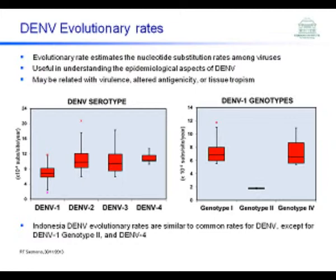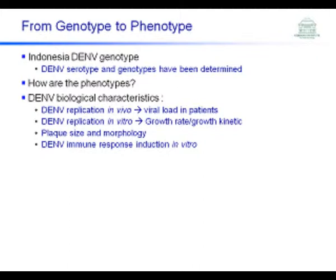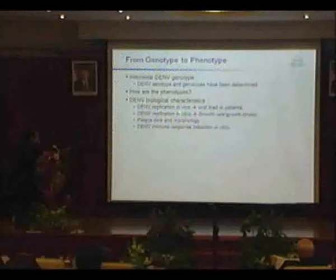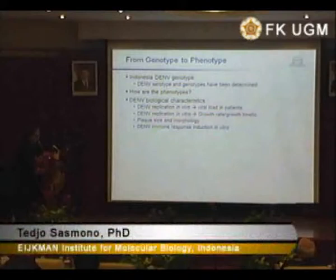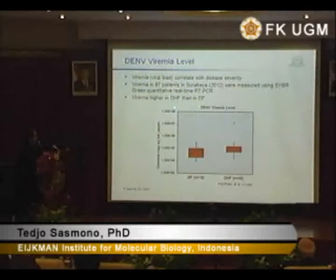Based on phylogenetic analysis, we can infer the evolutionary rates of dengue viruses in Indonesia. The evolutionary rate is an estimation of the nucleotide substitution among viruses and is useful in understanding the epidemiological history of the viruses. In general, the rates are quite similar to common dengue evolution rates, except for the dengue 2 genotype 1 I mentioned before, which mutates very slowly. Also interesting is that dengue 4 has an evolutionary rate that is quite faster than the common rates seen globally for dengue 4.